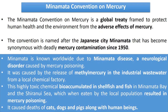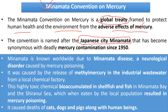The Minamata Convention on Mercury is a global treaty framed to protect human health and environment from harmful effects of mercury, and is named after the Japanese city Minamata. Minamata City is famous due to Minamata disease, caused by the release of methylmercury in the industrial wastewater from a local factory, which caused the death of cats, dogs, pigs, and human beings. It's important to remember that it is named after the Japanese city Minamata, and Minamata disease is caused by the release of methylmercury.